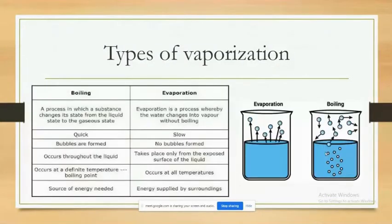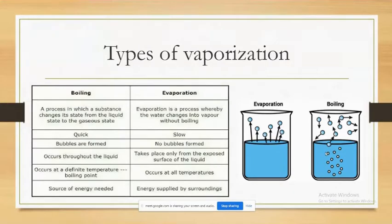Vaporization is of two types: boiling and evaporation. Boiling is a process in which a substance changes from liquid to gaseous state, and evaporation is a process in which water changes from liquid to vapor. Boiling is a quick process and evaporation is a slow process. Bubbles are formed in boiling, whereas no bubbles are formed in evaporation.